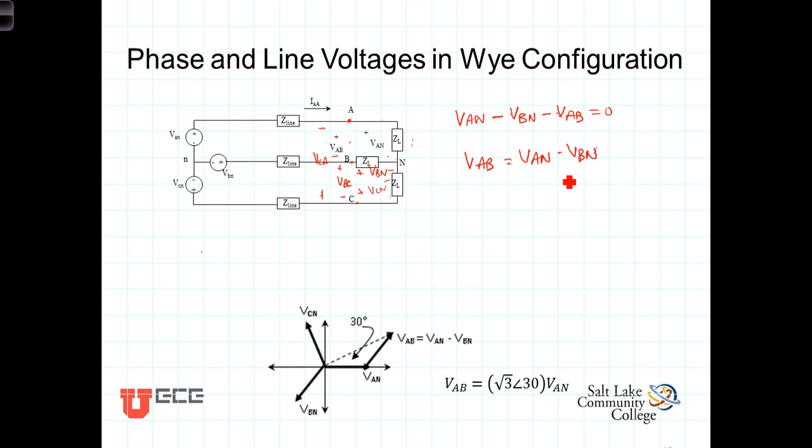It's pretty easy to see what's going to happen if we take this equation here and look at it in the phase domain, or in a phasor diagram. I've drawn here VAN, VBN, at least for a positive or an ABC sequence,